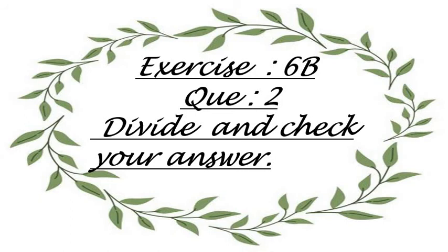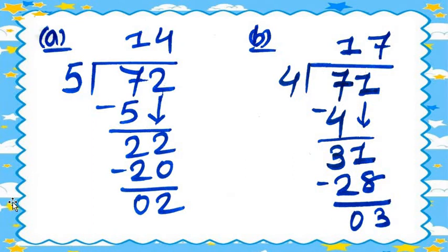Now Exercise 6B, question number 2: divide and check your answer using the proper method. Question 2a: 72 divided by 5. Five ones are 5, so 7 minus 5 equals 2. Bring down 2. Five fours are 20, so 22 minus 20 equals 2. The quotient is 14 and the remainder is 2.